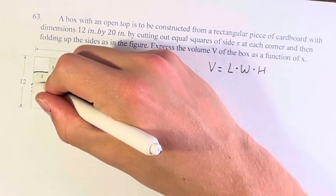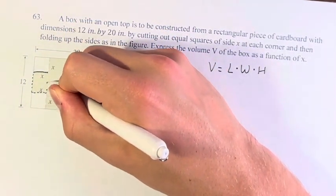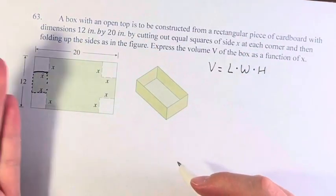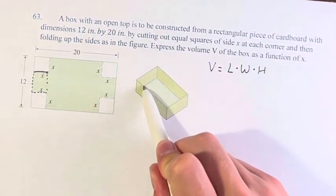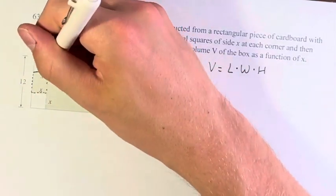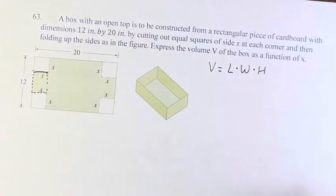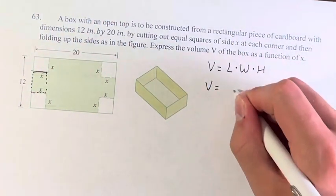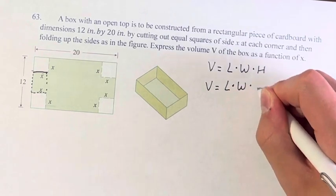When this piece is folded up, it becomes this side right here and its height is just represented by x. So V is equal to L times W times x.